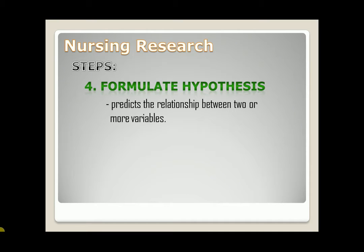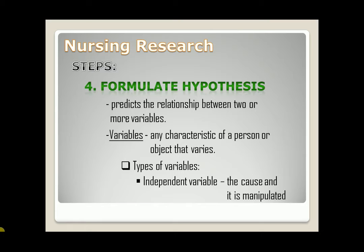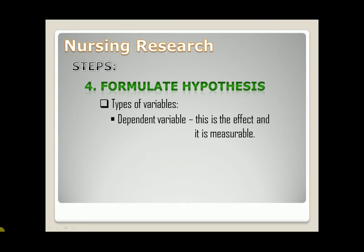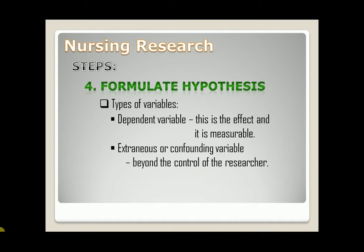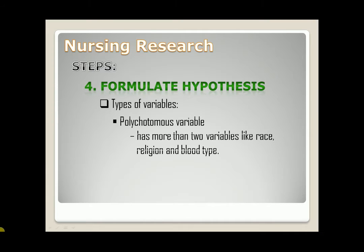What are variables? Any characteristic of a person or object that varies. Types of variables: first, independent variable — this is the cause and it is manipulated. Second, dependent variable — this is the effect and it is measurable. Third, extraneous or confounding variable — it is beyond the control of the researcher. Fourth, dichotomous variable — it has two categories like male or female, yes or no, and true or false. Lastly, polychotomous variable — it has more than two variables like race, religion, and blood type.